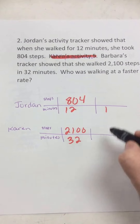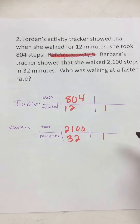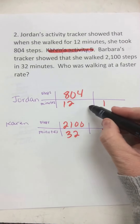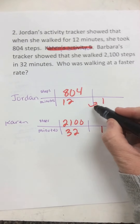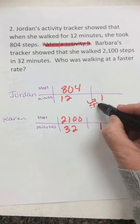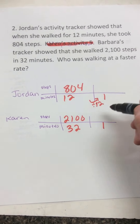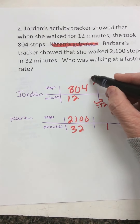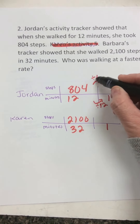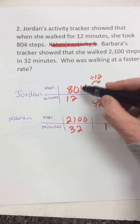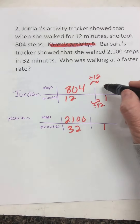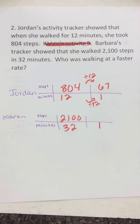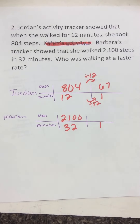What I want to go to is one minute for each of them. For Jordan, I divide by 12. Whatever I do to the bottom, I do to the top — we already did this one. 804 divided by 12 was 67, so Jordan takes 67 steps per minute.